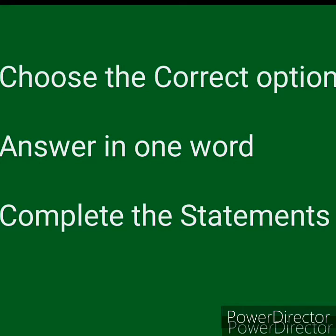In your exam, the questions in English literature will be in the form of choose the correct options, answer in one word, and complete the statements. In MCQs, there will be a question with 4 options — one will be correct and you have to choose it. In answer in one word, be careful: your spelling should be correct. For correct spelling you will get 1 mark and for incorrect spelling you will get 0. So be very particular about spellings of the words.